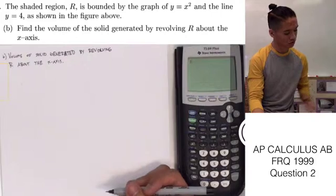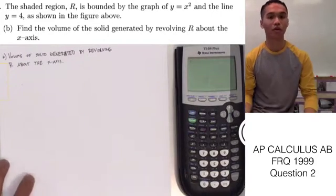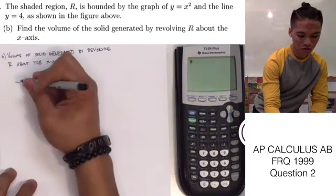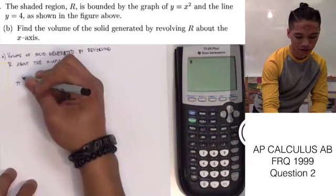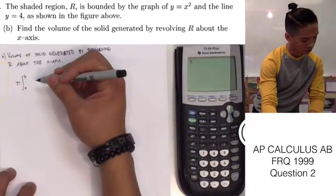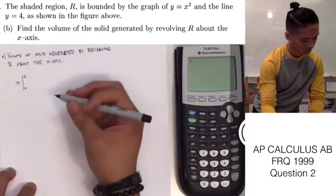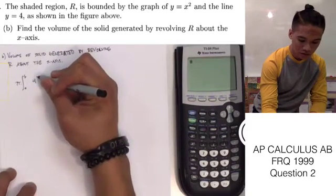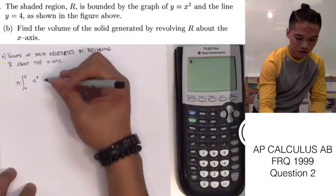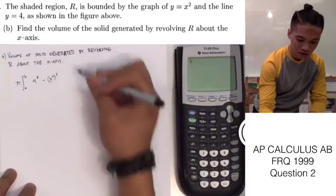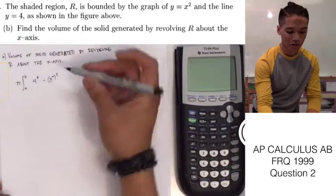So the first thing that we need to do is set up our integral function for volume. For volume, we know that it is pi integral from A through B of our top function, which is 4, squared, minus our bottom function, which is going to be x squared, squared.